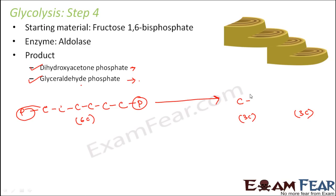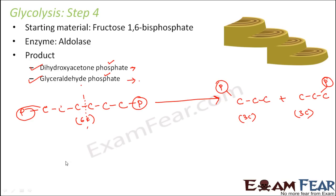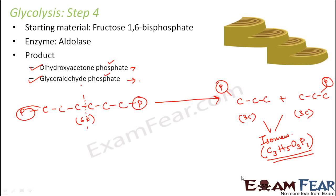The first three-carbon compound has one phosphate group, and the second three-carbon compound also has one phosphate group. So it gets split such that you now have two three-carbon compounds with one phosphate group each. Both of them have the same molecular formula: C3H5O3P. Their arrangements are different, making them isomers of each other. This all happens in the presence of the enzyme called aldolase.